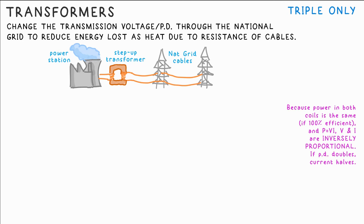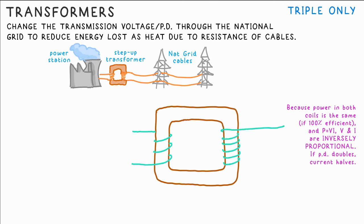In an ideal world the power in and out of a transformer should be the same. That would mean that it's 100% efficient. So V and I are inversely proportional. We can therefore say that V times I for the primary coil is equal to V times I for the secondary coil.